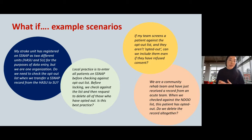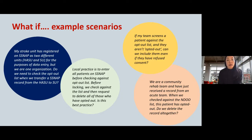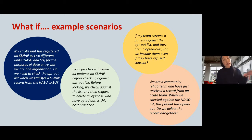Third scenario: if a team screens a patient against the opt-out list and they aren't opted out, can they be included even if they've refused consent? Yes. If a patient has refused consent but is not on the opt-out list, it works just as it did pre-opt-out. You can enter their information on the web tool; when you reach the consent question in Section 3 or Section 7, you check 'no,' and all identifiable information is wiped from the record.